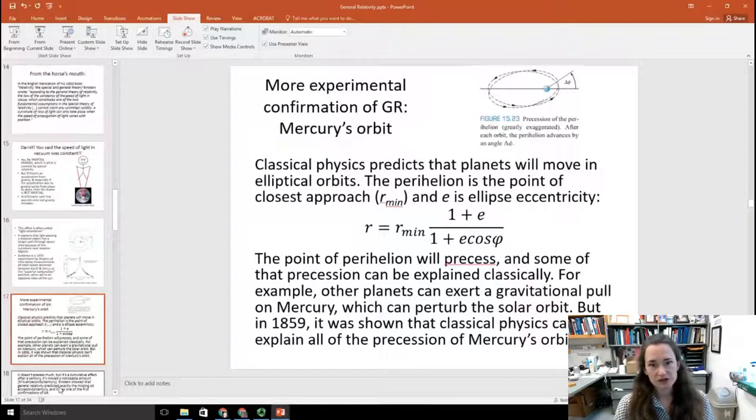Some more confirmation of general relativity came in the form of Mercury's orbit. This was actually one of the first things that confirmed that Einstein's theory of general relativity had merit. So what do we mean by this? Well, classical physics predicts that the planets are going to move in elliptical orbits, and the perihelion is defined as the point of closest approach, and the e here is the eccentricity of the ellipse. So if you have an equation for the position of an object in this elliptical orbit, it would be r equals r min times 1 plus e divided by 1 plus e cosine of phi. And so the point of perihelion is going to precess, and a lot of that precession can be explained classically. So Mercury's orbit precesses, and most of that can be explained classically. For example, classical explanations can include other planets passing near Mercury that can exert gravitational pulls on it, and that perturbs its orbit.